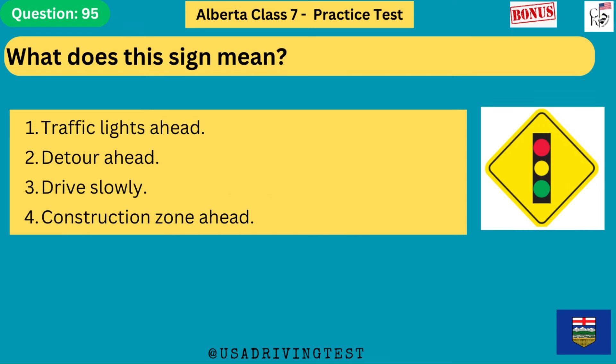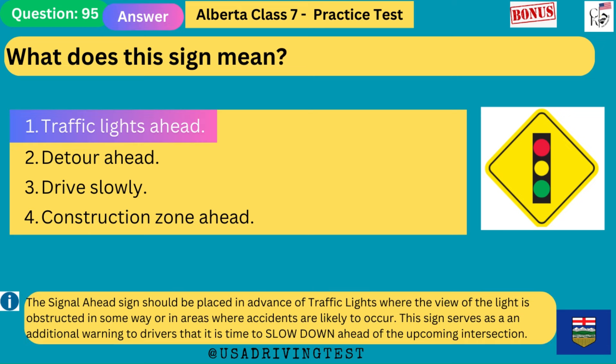What does this sign mean? 1. Traffic lights ahead. 2. Detour ahead. 3. Drive slowly. 4. Construction zone ahead. The answer is 1: traffic lights ahead. The signal ahead sign should be placed in advance of traffic lights where the view of the light is obstructed or in areas where accidents are likely to occur. This sign serves as an additional warning to drivers to slow down ahead of the upcoming intersection.